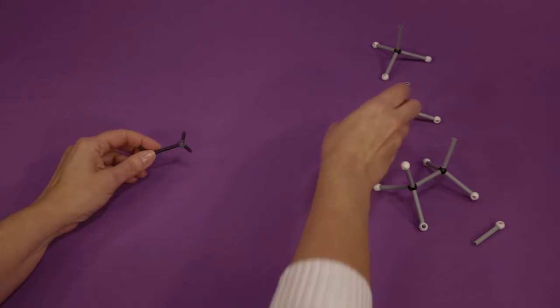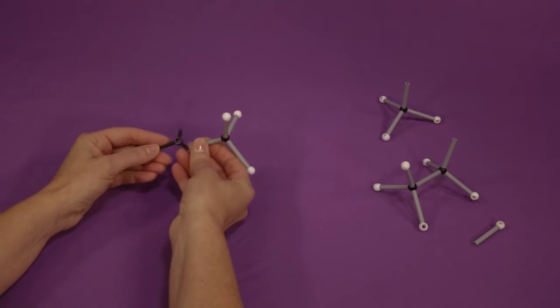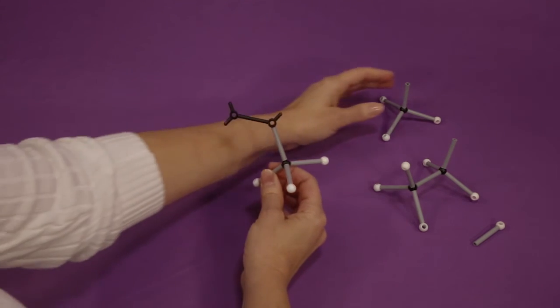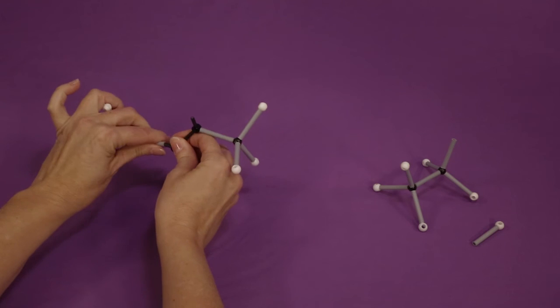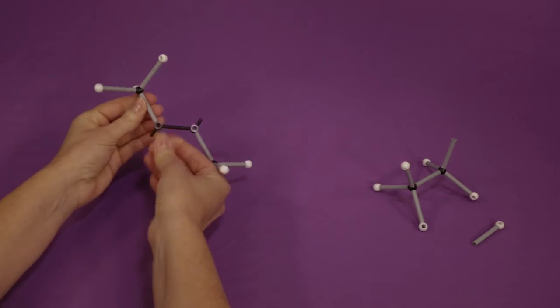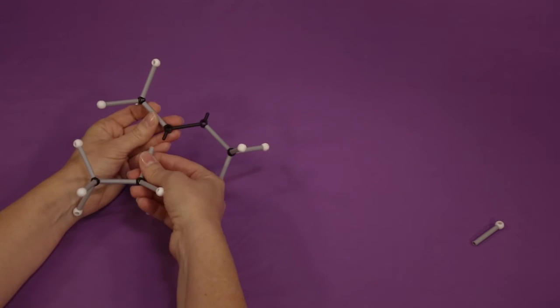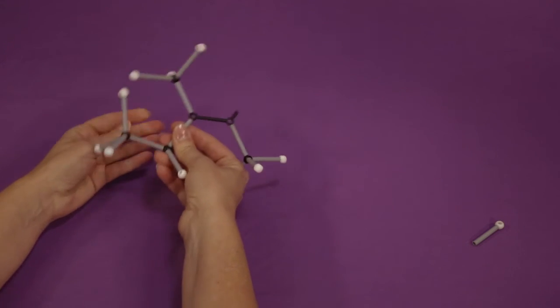Take the double bond and attach one of the methyl groups to the bottom prong of either carbon. Attach the other methyl group to the top prong of the opposite carbon. Attach the ethyl group to the remaining bottom prong on the double bond and add a hydrogen to the other side.